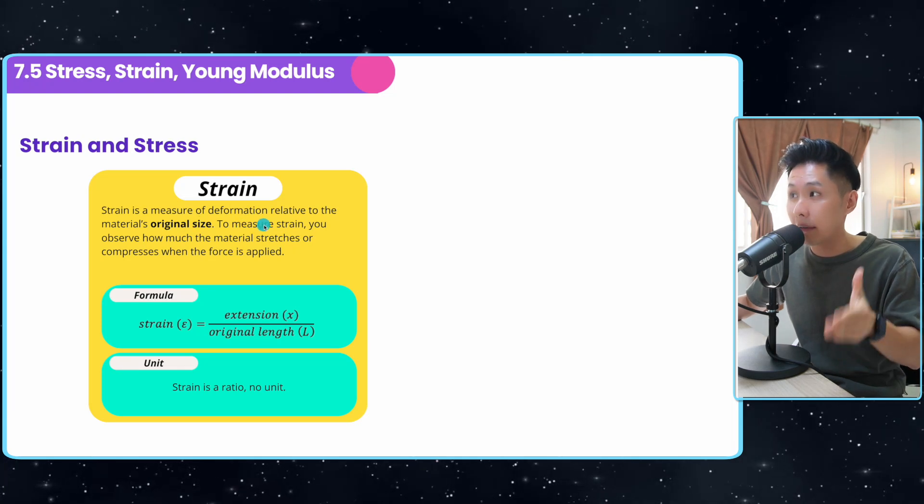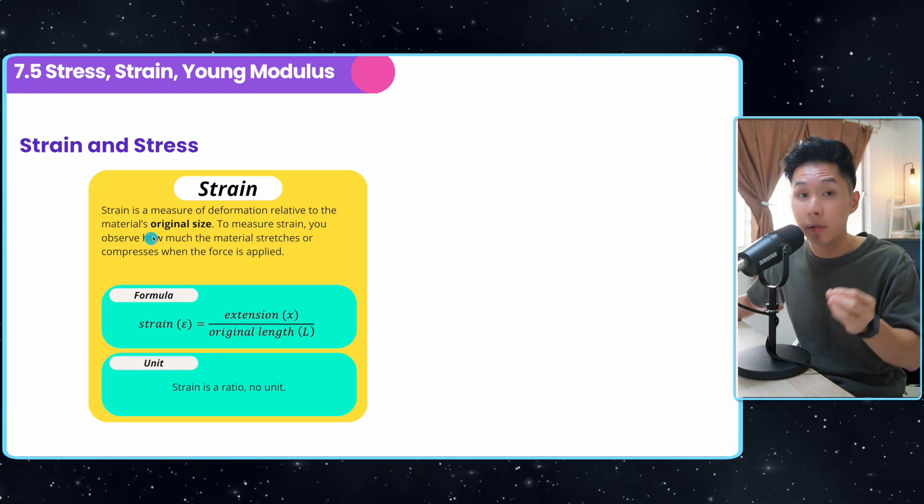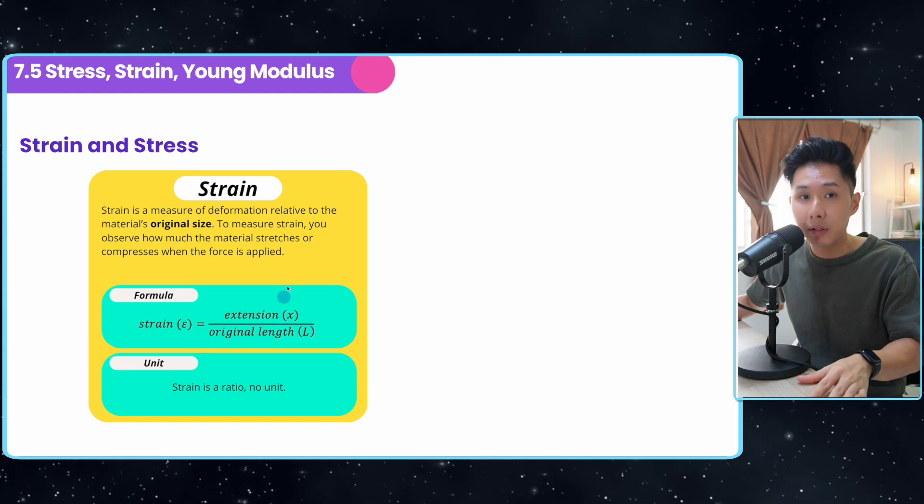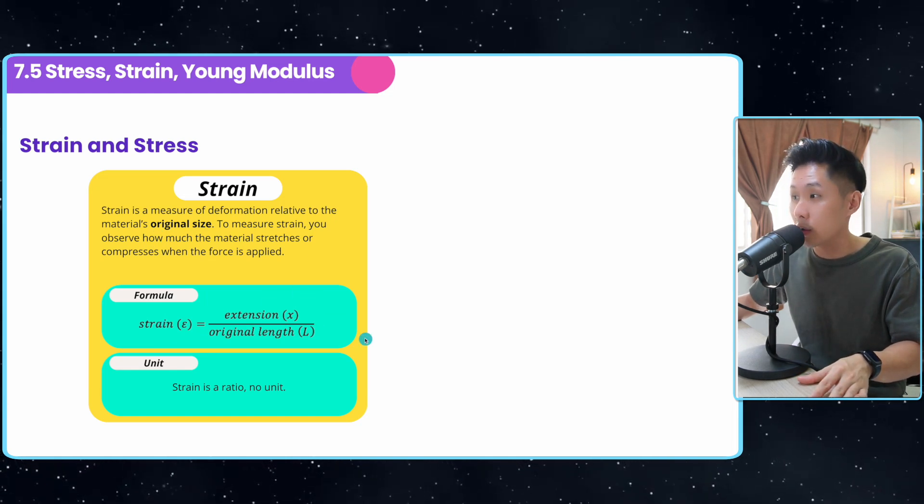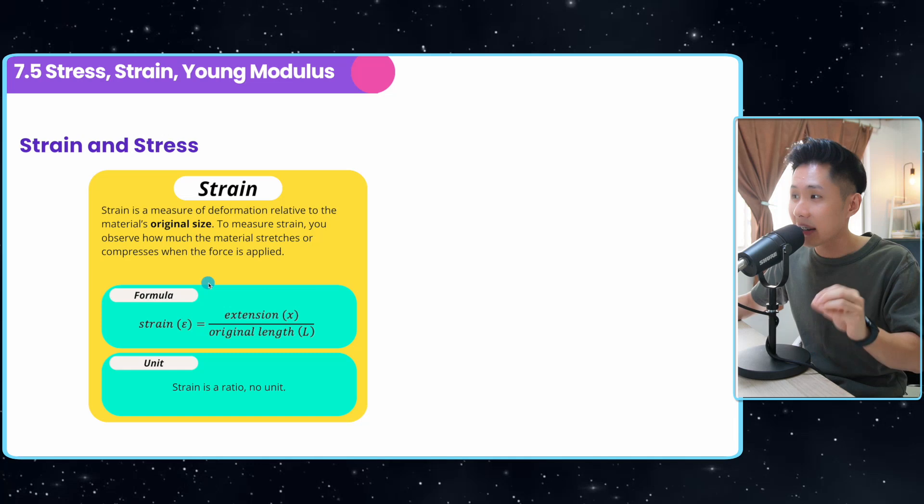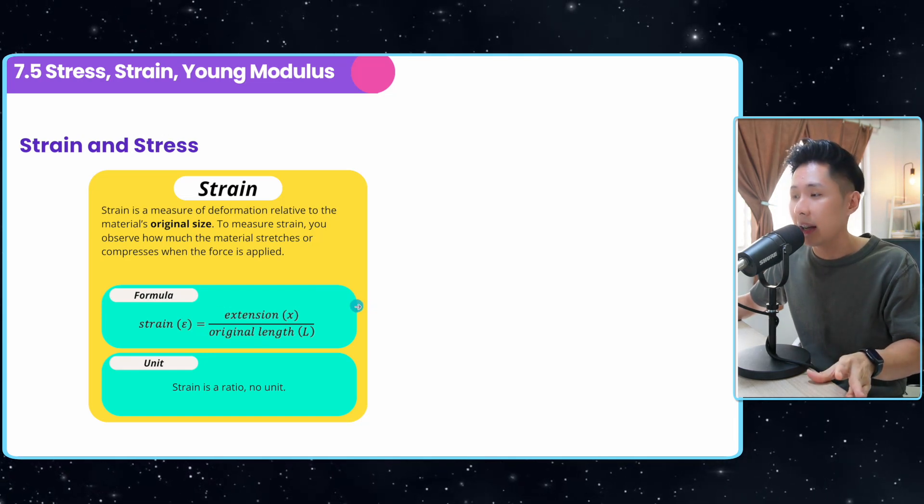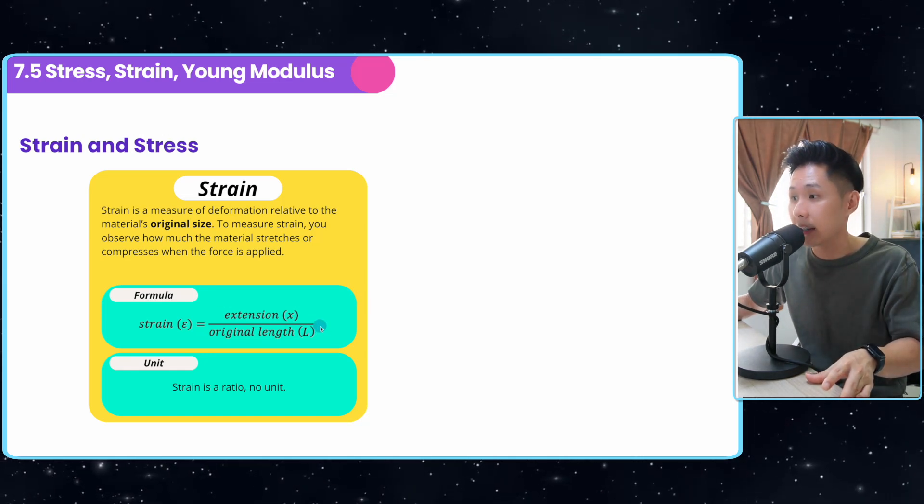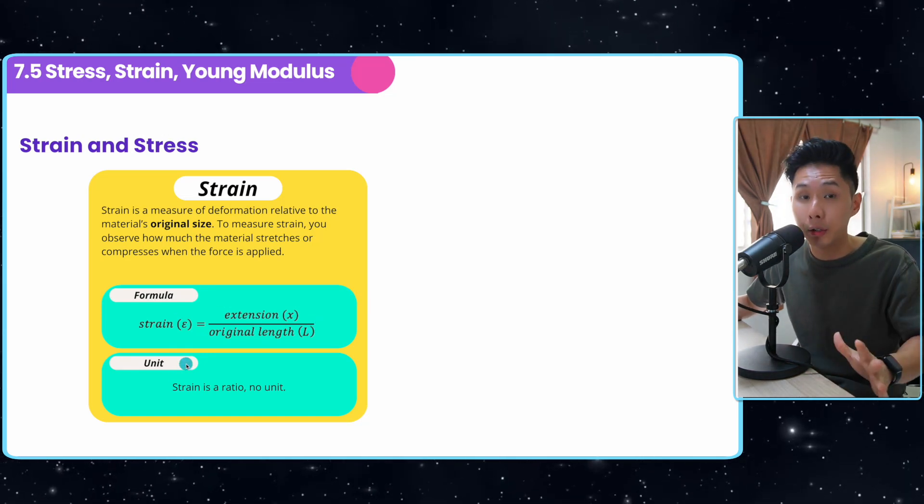Strain is a measure of deformation relative to the material's original size. To measure that, you get the original length of the material, it doesn't have to be a string, get the extension when force is applied, and you have how much strain it gets. It's a ratio, therefore it has no unit.